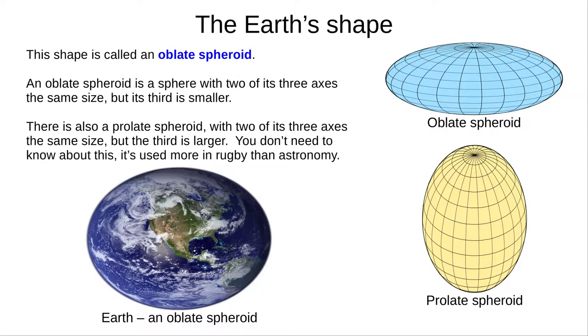This shape is called an oblate spheroid, and you should learn that name. It's like a sphere that has been stretched equally on two of its axes. The shorter axis is the Earth's axis of rotation. The alternative, prolate spheroid, doesn't come up in astronomy.